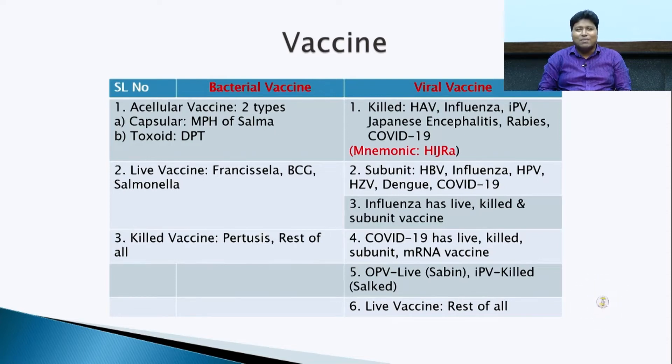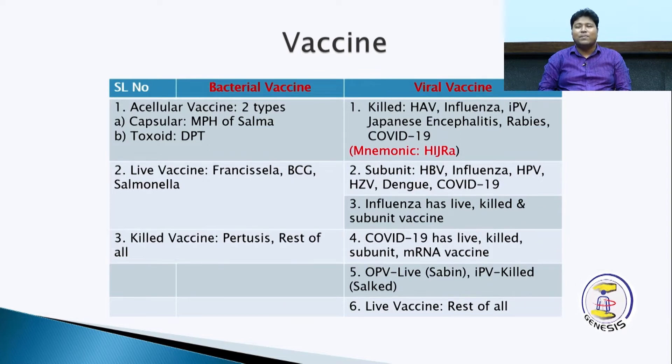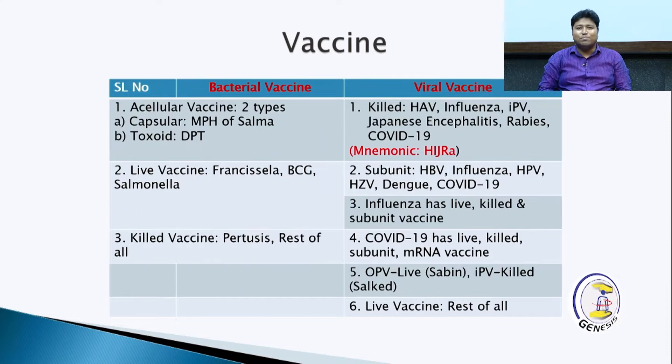Bacterial live vaccines include BCG, Salmonella, and Francisella. For example, BCG and Salmonella are live vaccines.